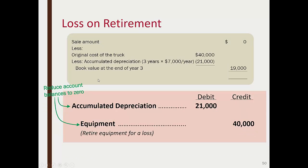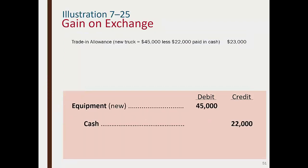If we retire the asset entirely — nobody buys it, it's just a piece of junk — the book value is $19,000 with no cash received. Journal entry: debit Accumulated Depreciation $21,000, debit Loss $19,000, credit Equipment $40,000. The entire remaining book value becomes a loss.